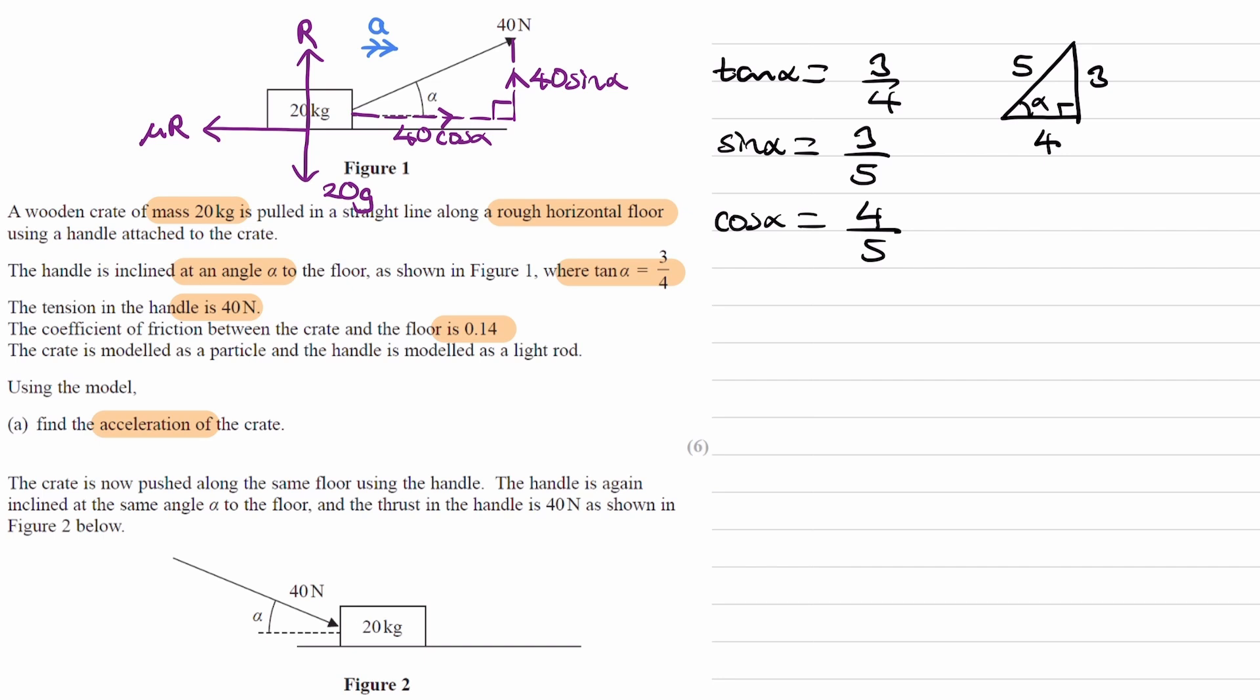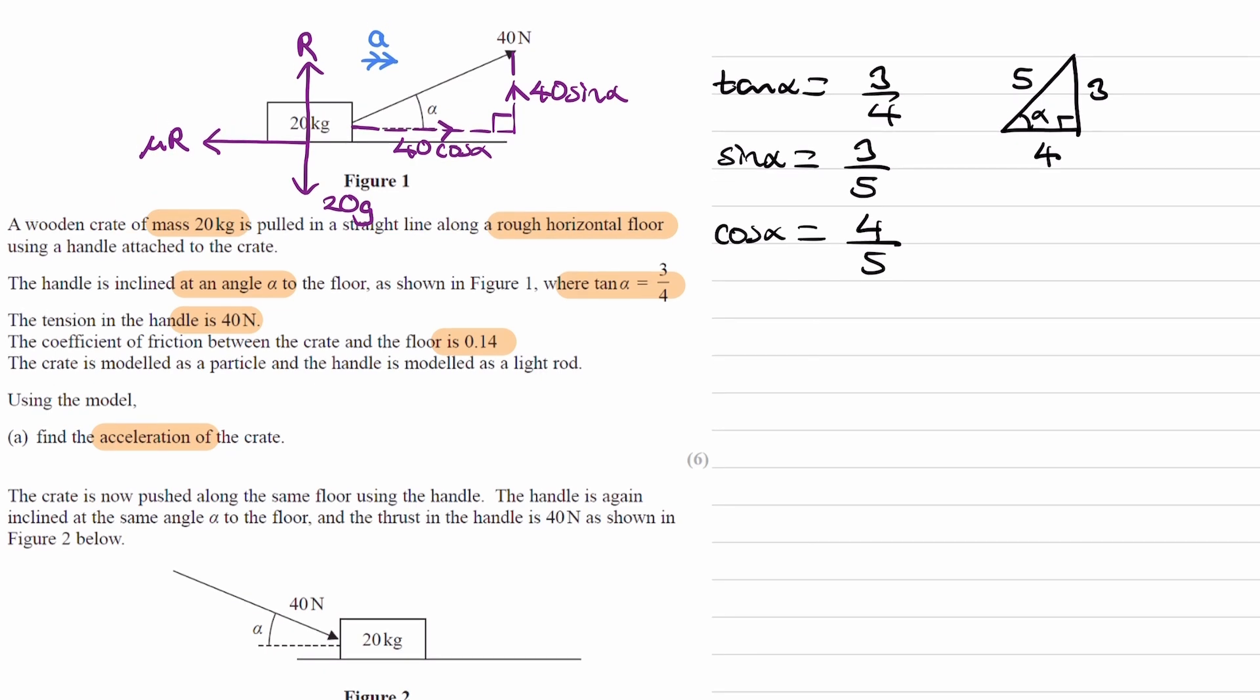So we want to work out the acceleration, so let's consider the resultant force horizontally. If it's accelerating towards the right, 40 cos alpha should be bigger than μR. When we take the two things away, 40 cos alpha minus μR should give us the resultant force towards the right. If this is the resultant force, this should be equal to Ma. Now we can put in all the things that we know. 40 times 4/5 minus 0.14R equals 20a. Simplifying, 32 minus 0.14R equals 20a.